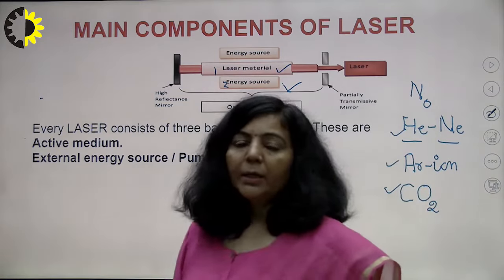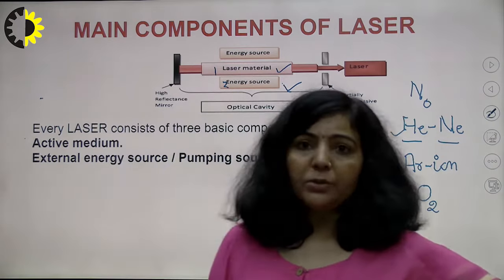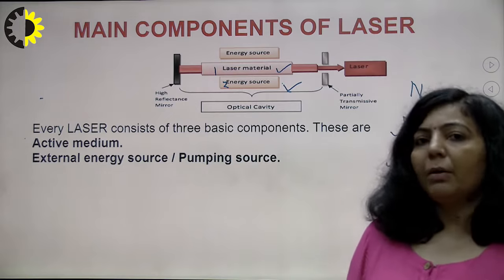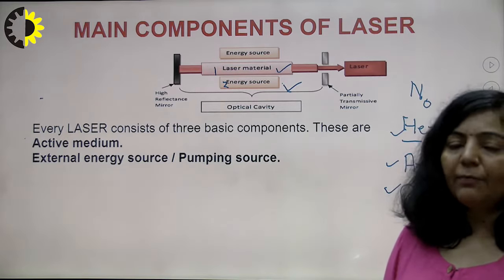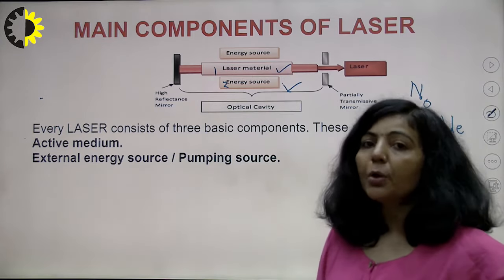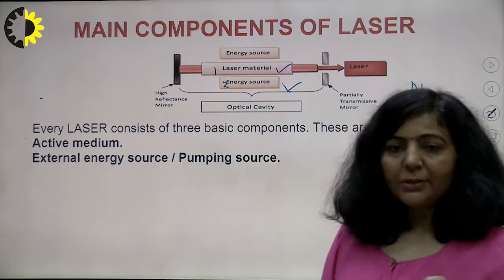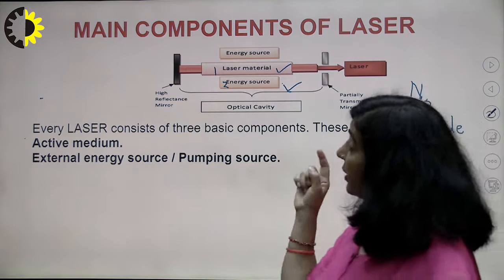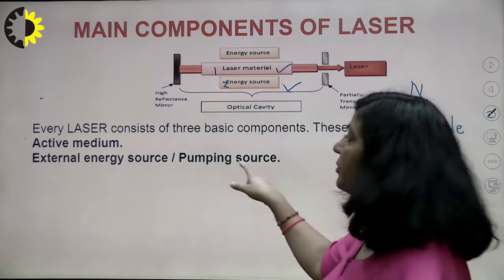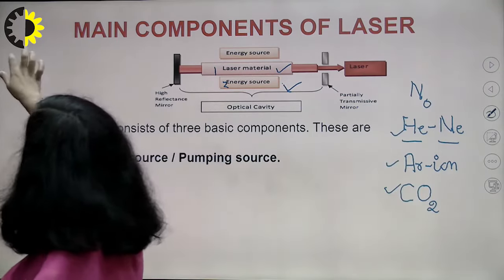If you have a laser, the first requirement is an active medium. In that active medium, most atoms try to remain in ground state and only few are in excited state. You have to invert this situation because population inversion is required to get an amplified laser beam. The method through which you achieve that population inversion state is your pumping method or pumping source — the second essential requirement of a laser system.